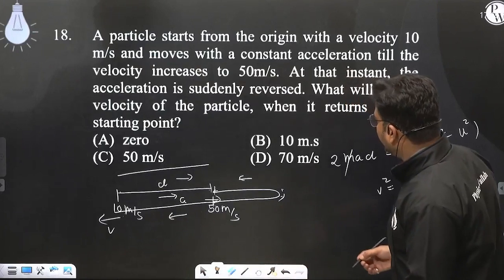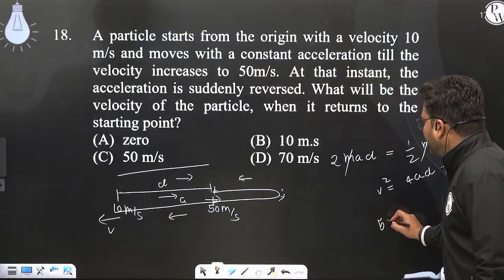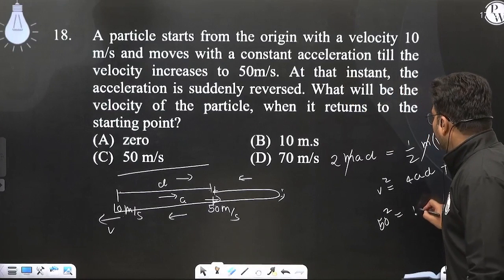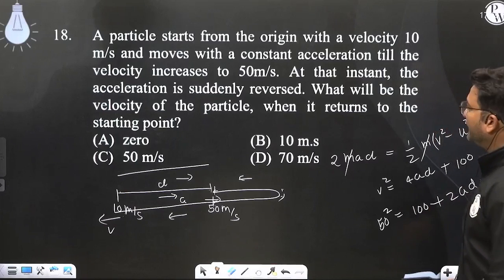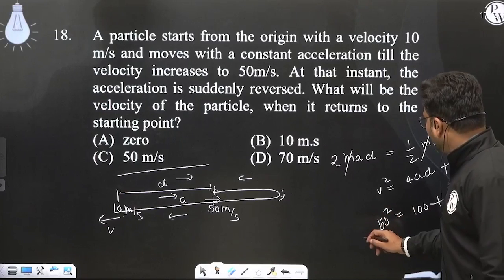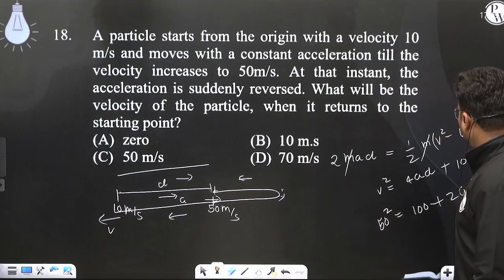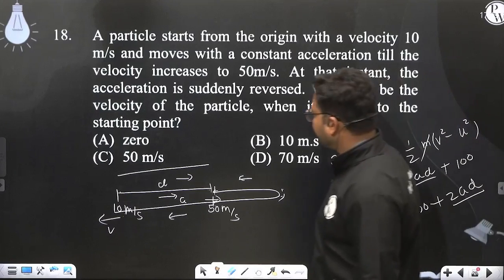Work energy theorem is the same form. So here you will get 50 square equals to 100 plus 2AD. Now you can easily substitute the value of 2AD from the second equation into the first equation. You will get V square very easily.